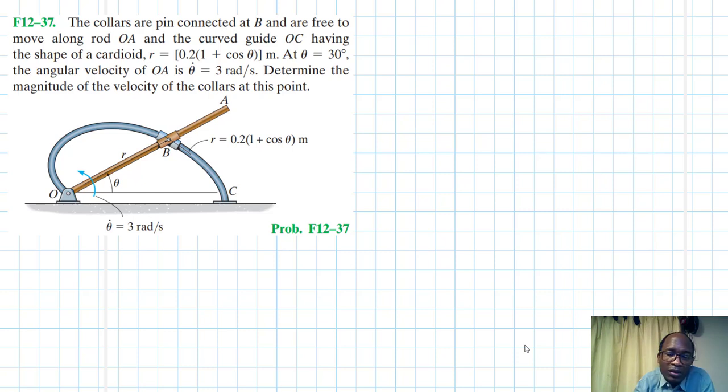At θ = 30°, the angular velocity of OA is θ̇ = 3 rad/s. Determine the magnitude of the velocity of the collars at this point.